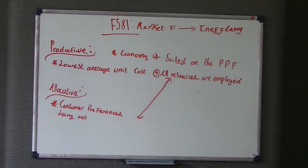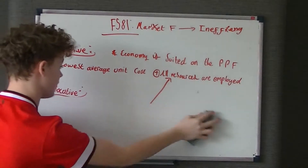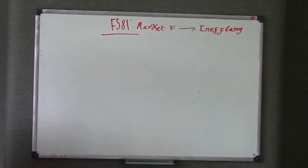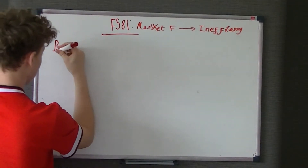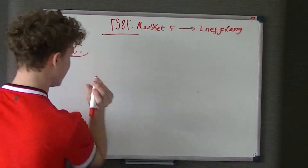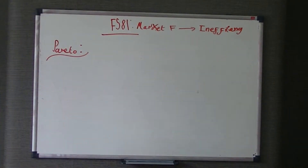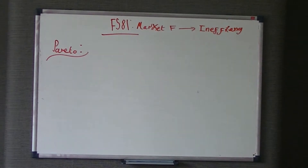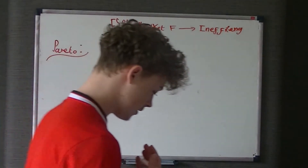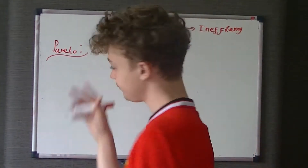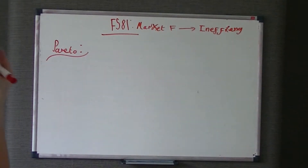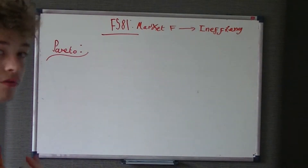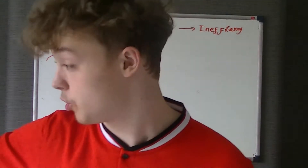We can mix allocative and productive efficiency together to get something called Pareto efficiency. Productive efficiency is when the economy is producing at the lowest average unit cost with resources employed, and allocative efficiency is when consumer preferences are being met. If the economy has been both productive and allocative, there's no way it can improve itself in terms of efficiency. If we try to make someone better off, we're going to make someone else worse off.